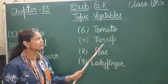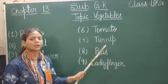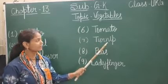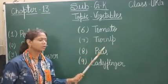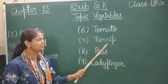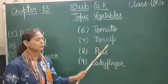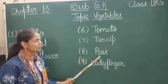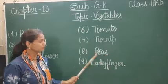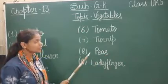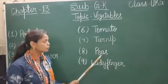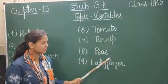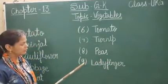Next is turnip. Turnip means saljam. Saljam ko kaise khaate hain? Isse hum kacha hi khaate hain. Isse pakaane ki zaroorat nahi hoti. Next is peas. Peas means matar. Matar ki jo sabzi hoti hai, usko pehle pakaaya jaata hai aur phir khaaya jaata hai.